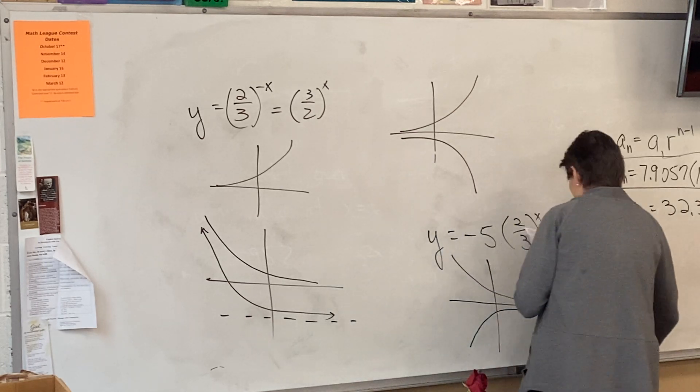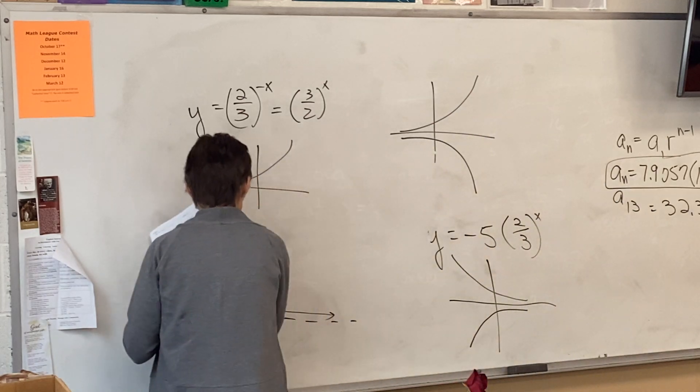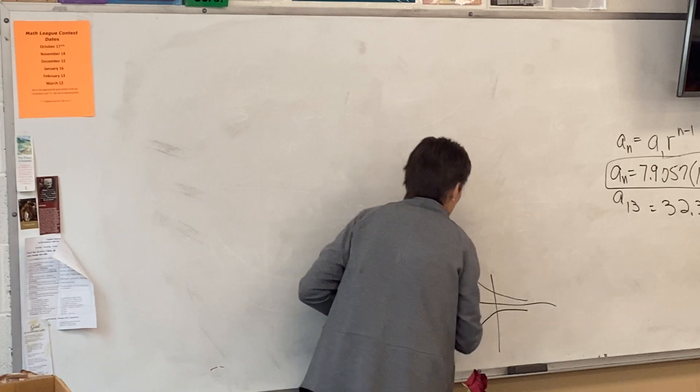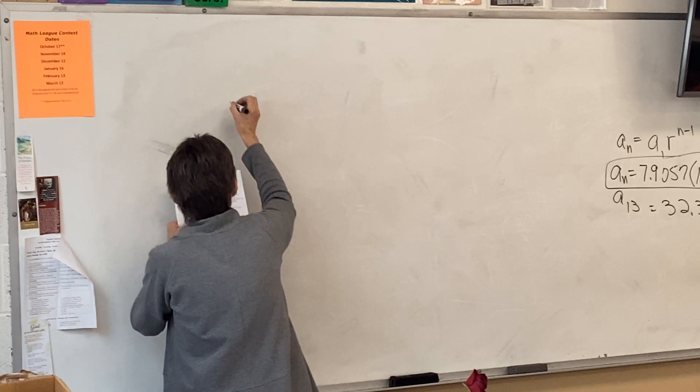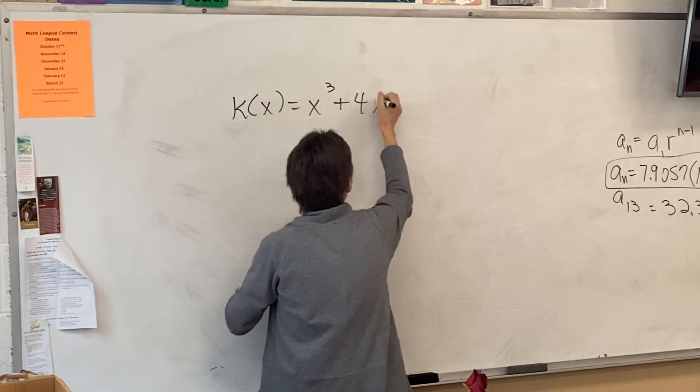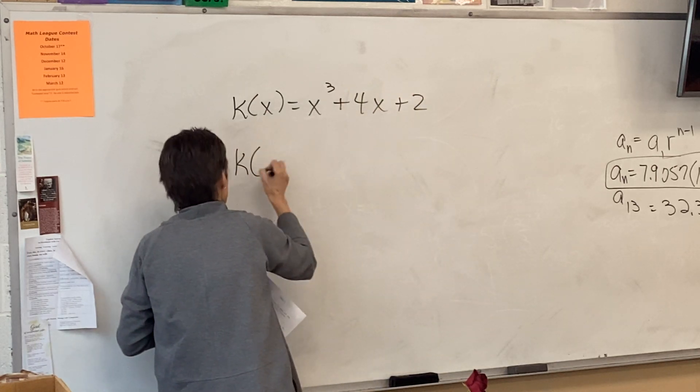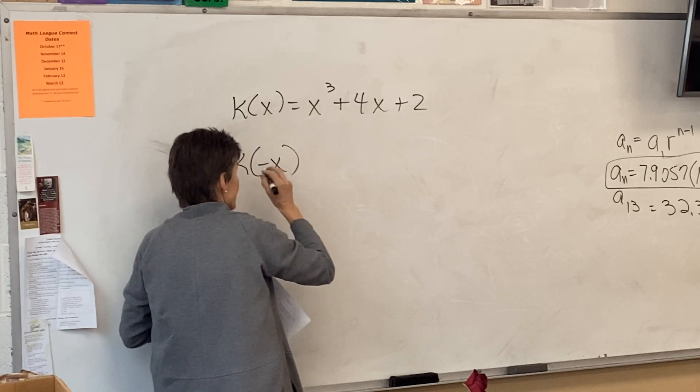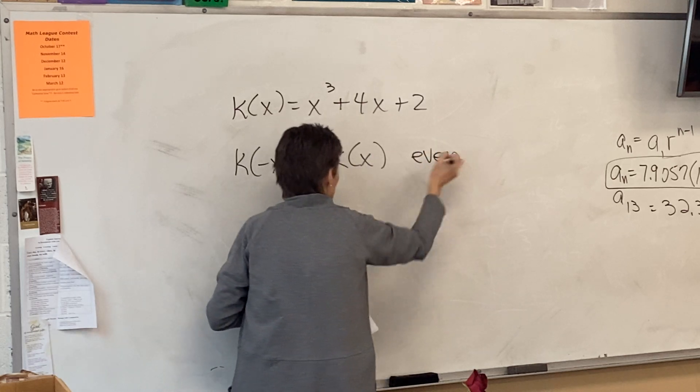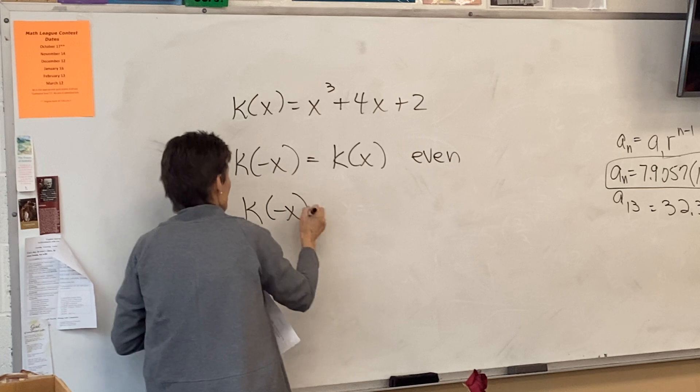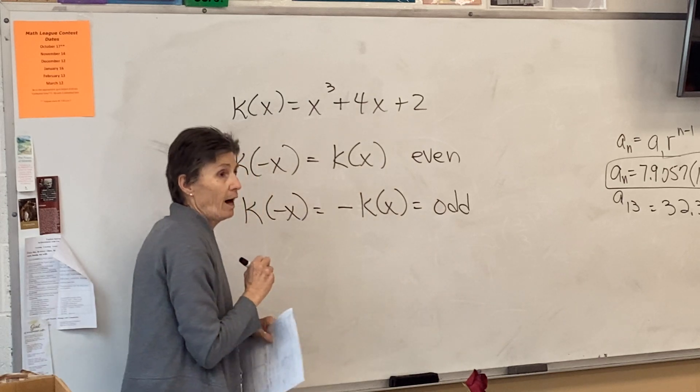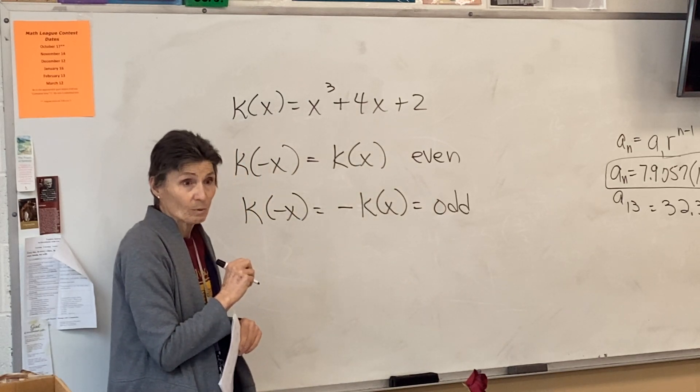Is this thing even, odd, or neither? All right. Even, odd, or neither? So let's see. Here's my function. How do I test if something is even or odd? Plug in a negative. That's the key. You plug in a negative. If it's even, then that will be the same as the original problem. If you get the opposite of the original problem, that is what it means to be odd.